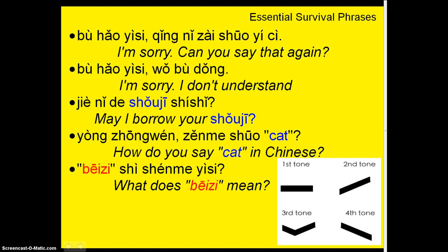Super essential, especially as a student of Chinese — you've got to know how to say 'how do you say that in Chinese?' The word yòng (fourth tone, going down) means 'use.' Zhōngwén is one of the ways to say Chinese. So: yòng zhōngwén zěnme shuō cat — literally 'using Chinese, how to say cat.' Yòng zhōngwén zěnme shuō cat.